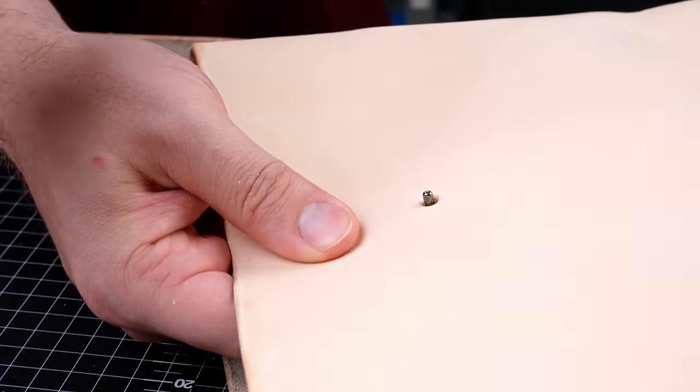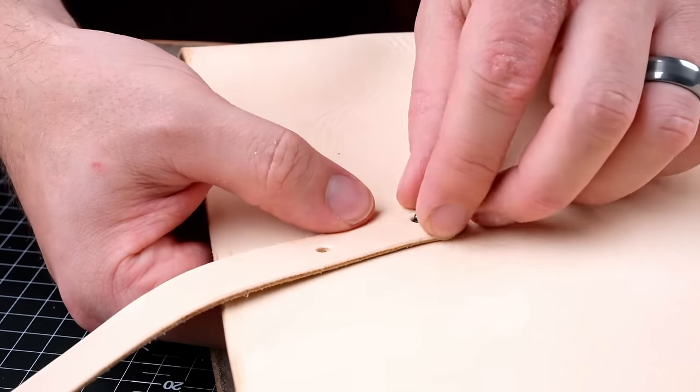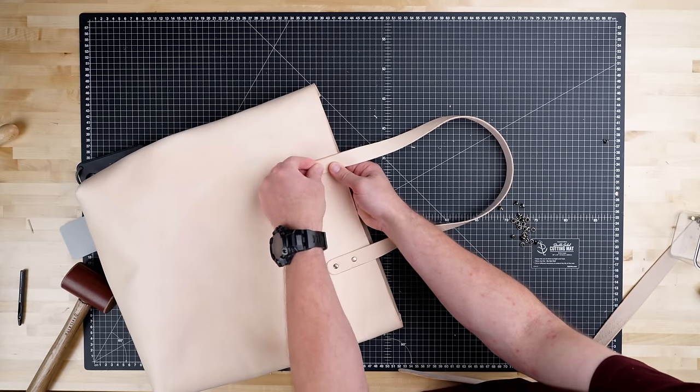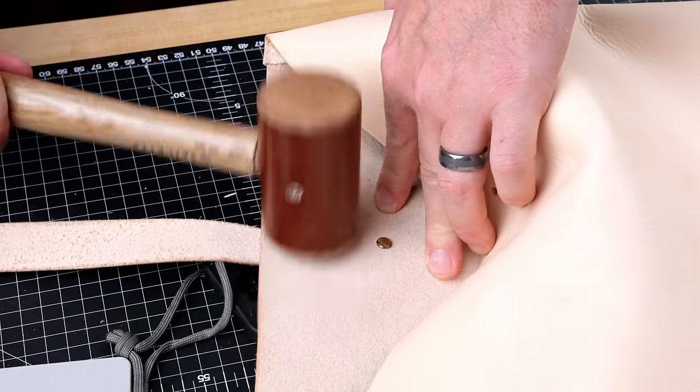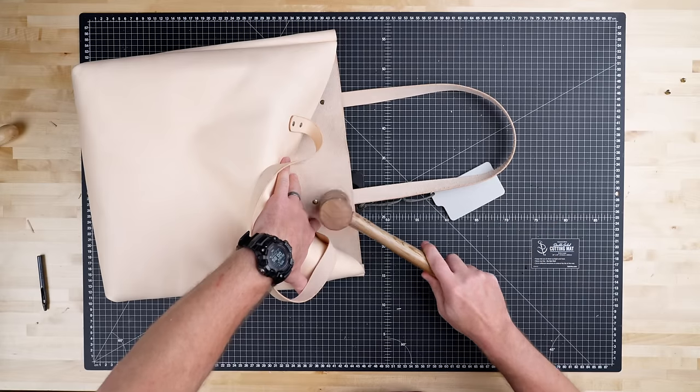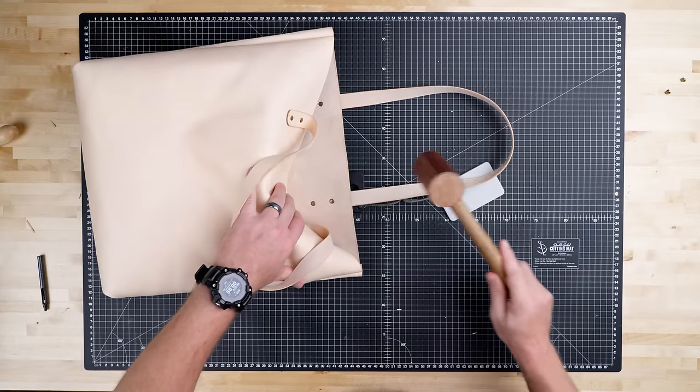Okay, all of our holes are punched and we're ready to attach the straps. We're going to be using rivets. Now let's set all of our rivets. I'm going to be using a mallet and hammering these from the inside of the bag. I don't want to miss and leave a mark on the outside of our bag.